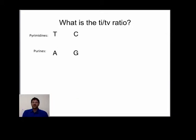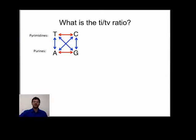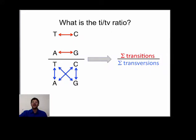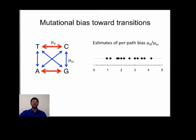Transitions and transversions are defined relative to two chemical classes of nucleotides called pyrimidines and purines. A change within a class is called a transition, and a change between classes is a transversion. When looking at cases of parallel evolution and counting up inferred transitions and transversions, the aggregate ratio always reflects both intrinsic rates of individual pathways and a multiplicity of paths that typically favors transversions — there are more transversions.